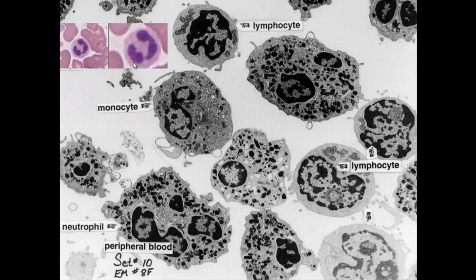Looking at a mature neutrophil in an electron micrograph alongside other white blood cells, we can see lymphocytes and neutrophils. The neutrophil shows two or three lobes of the lobulated nucleus — all one nucleus with different lobes — with nonspecific granules as well as little dumbbell-shaped specific granules characteristic of the neutrophil. A monocyte is also visible, which does not have the granules seen in neutrophils.